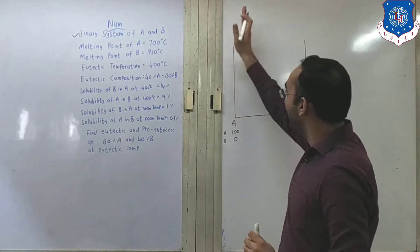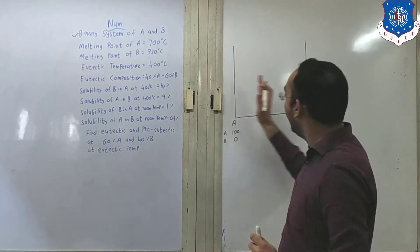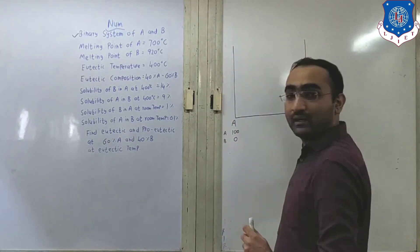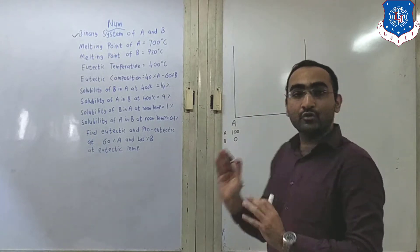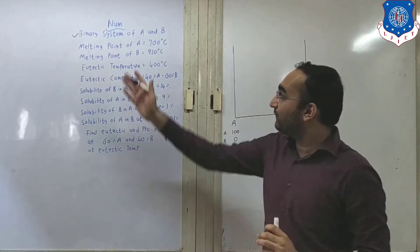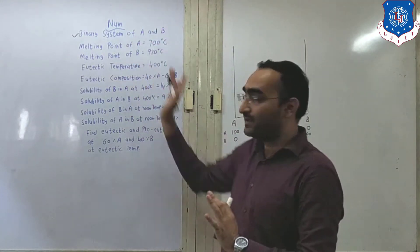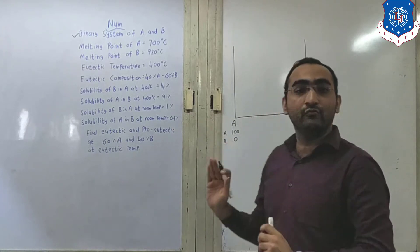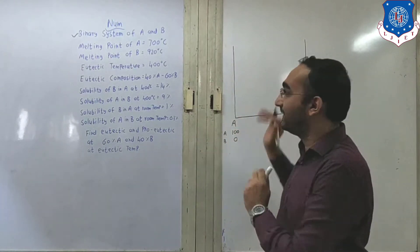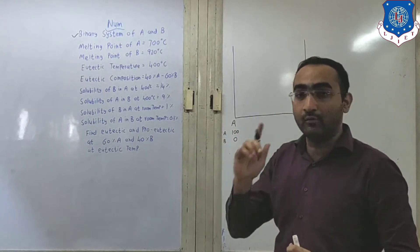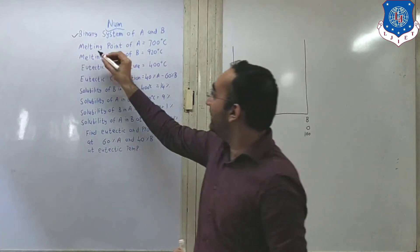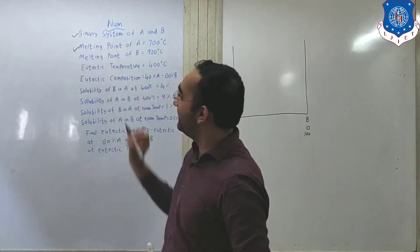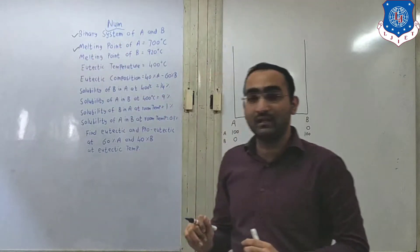This is the line of 100% pure metal A. This will be the line of 100% pure metal B. This is what we have written about this binary system — we have made the two points and the rough diagram. Now the first point: the melting point of A is 700 degrees Celsius.